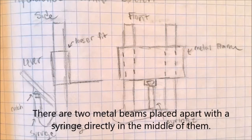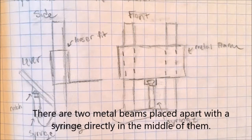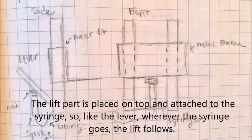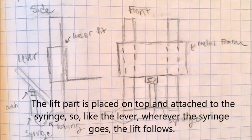There are two metal beams placed apart with a syringe directly in the middle of them. The lift part is placed on top and attached to the syringe. So, like the lever, wherever the syringe goes, the lift follows.